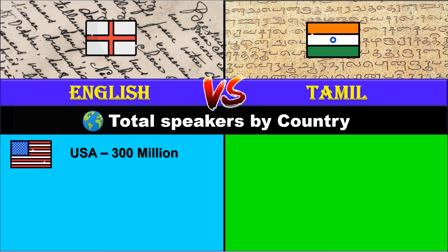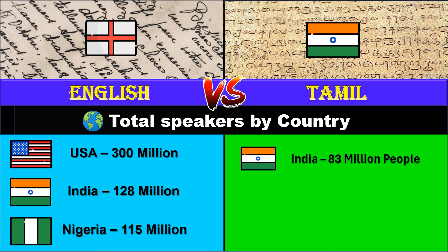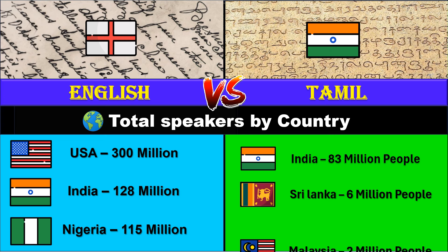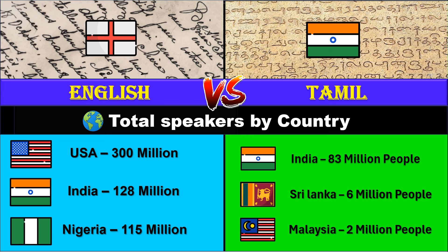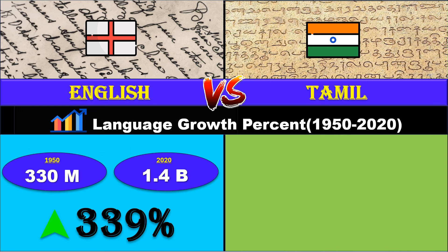Total speakers by country: English is mostly spoken in the USA with 300 million, followed by India with 128 million and Nigeria with 115 million. For Tamil, it's India with 83 million, followed by Sri Lanka with 6 million and Malaysia with 2 million. Language growth between 1950 and 2020: 339 percent for English, 200 percent for Tamil.